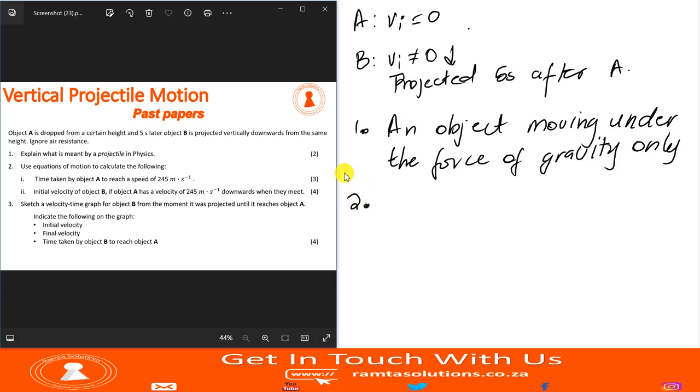Number two, use equations of motion to calculate the following. Roman figure one. Time taken by the object to reach a speed of 245 meters per second. This object is dropped, so I will take downwards as positive.